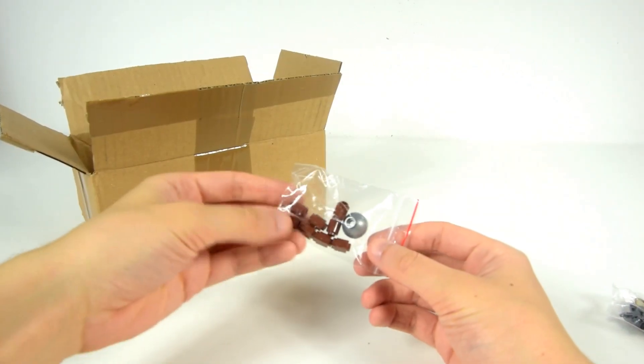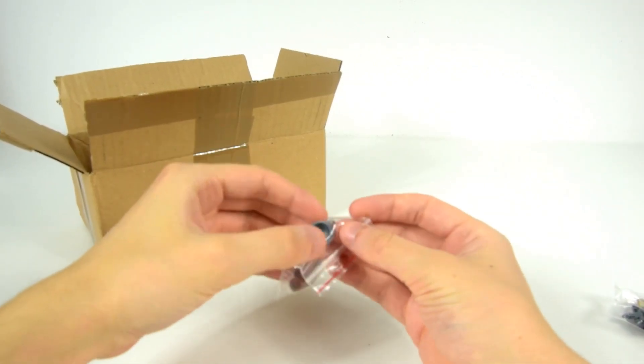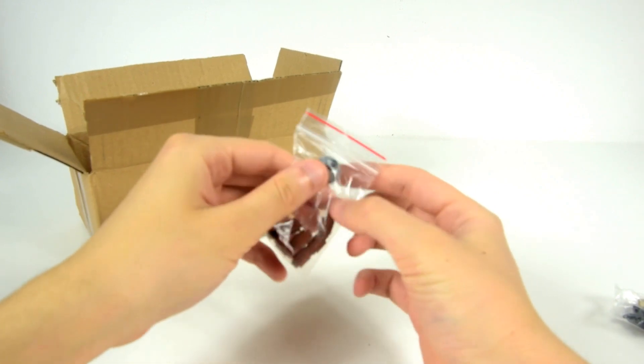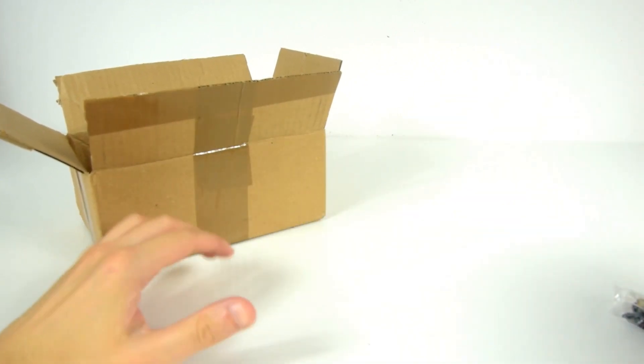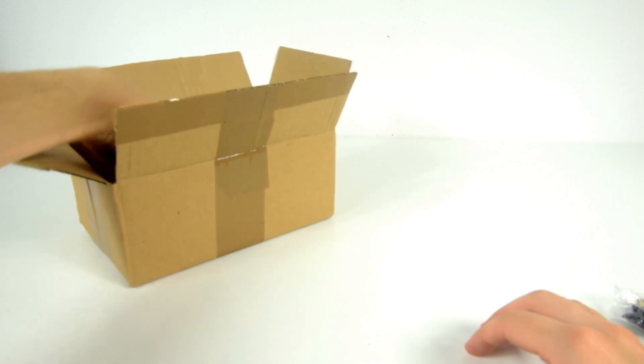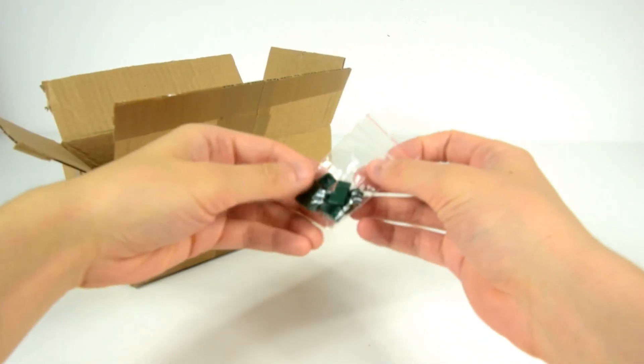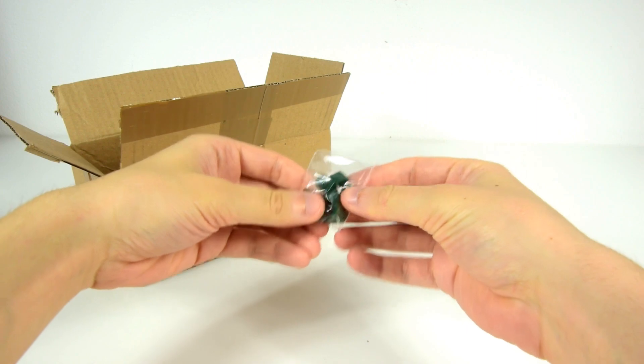Some 1x1 round bricks in reddish brown. And this very interesting part. This is bigger. Oh yeah, here it is. Dark green 1x1 slopes.